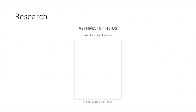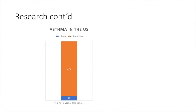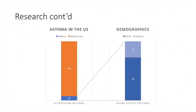From our initial research, we learned that there are approximately 22 million Americans with asthma. Of U.S. patients, 6 million are children. The number of diagnoses continues to grow. The World Health Organization reports that there are approximately 250,000 annual deaths from asthma. Almost all of these deaths are avoidable.